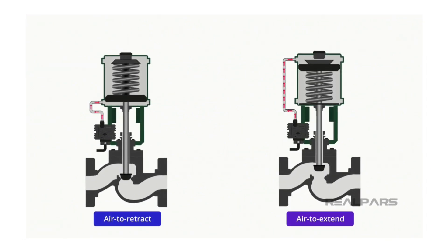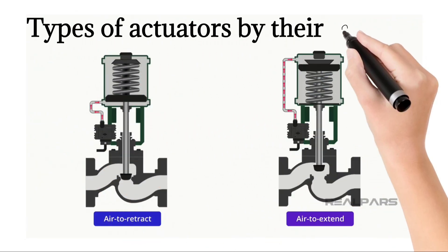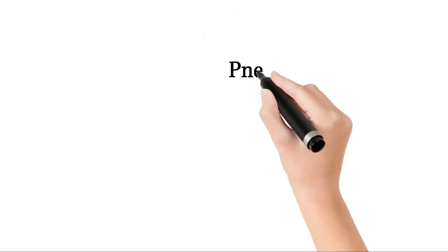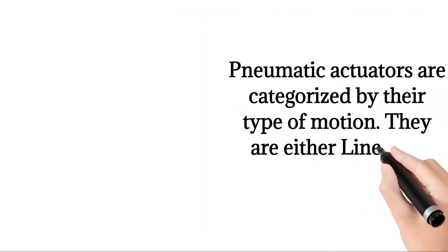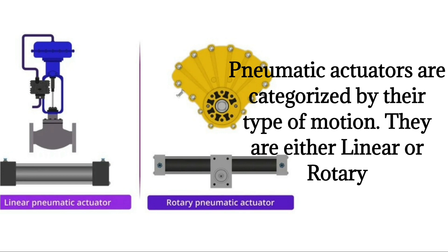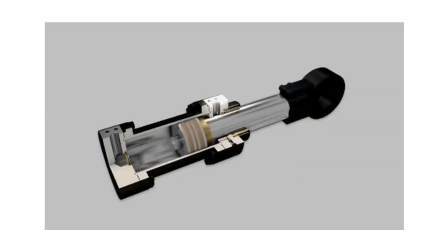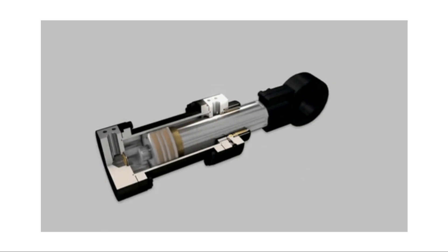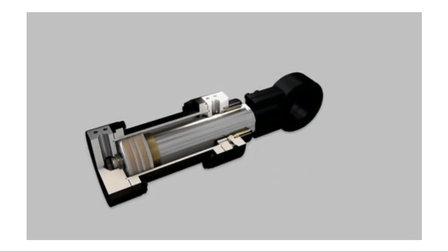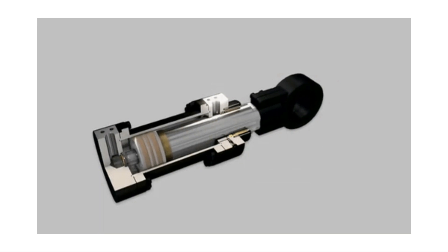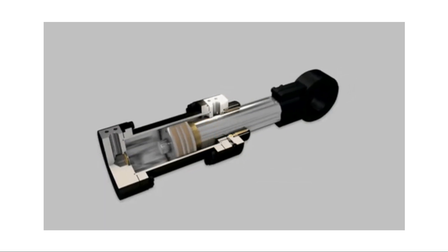Types of actuators by their motion. Pneumatic actuators are categorized by their type of motion. They are either linear or rotary. A linear pneumatic actuator can move something in a straight line. For example, a rod is moved in and out of a cylinder in a linear motion by a pneumatic energy source.